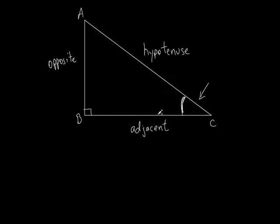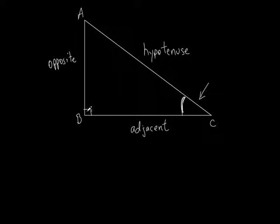This side here is adjacent to this angle. Someone might say, 'Well, the hypotenuse is also adjacent to this angle.' Yes, but we don't call it the adjacent side. Since this side is opposite the right angle, we call it the hypotenuse — always. The hypotenuse will never be called the adjacent side or the opposite side. So BC is adjacent to angle C, and AB is opposite to angle C.